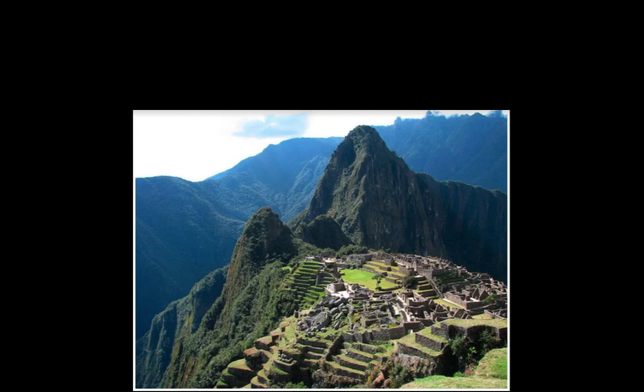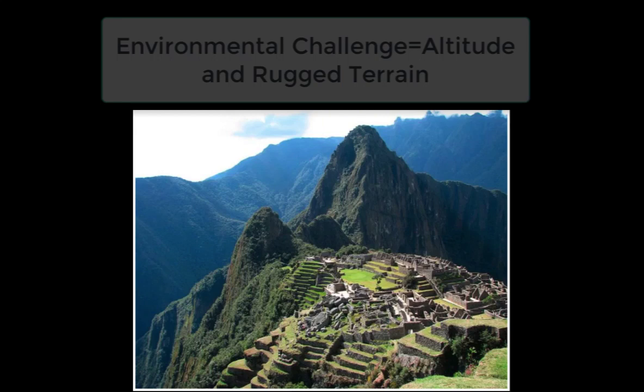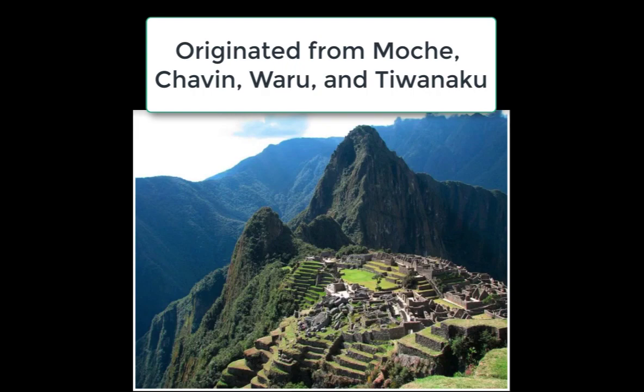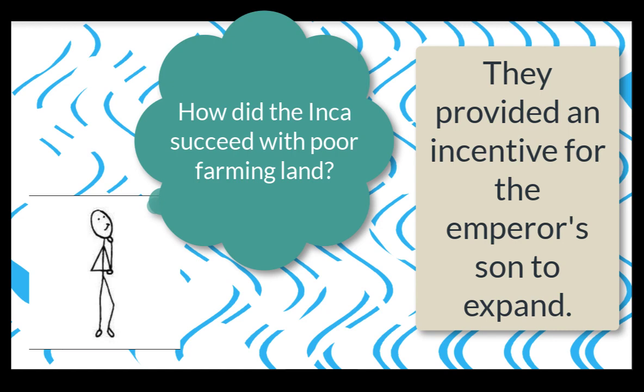We have another very similar example in South America, in the Andean Mountains — the Incas. The Incan Empire rose in a very difficult environment given the rugged terrain and high altitudes. The Incas came out of smaller communities called the Mochi, the Xaban, the Waru, and the Tiwanaku. The Incas faced a difficult problem of a lack of arable land, but they would eventually create a massive empire.